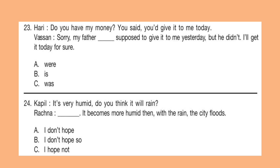Do you have my money? You said you would give it to me today. Vasan: Sorry, my father dash supposed to give it to me yesterday but he didn't. I'll get it today for sure.